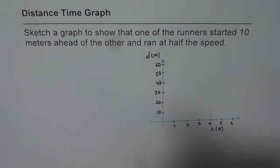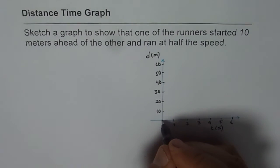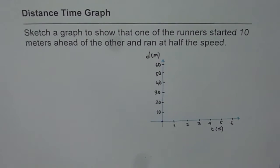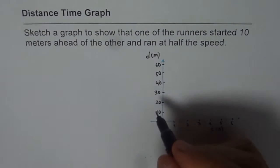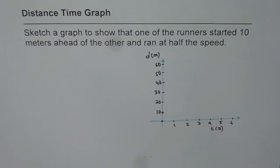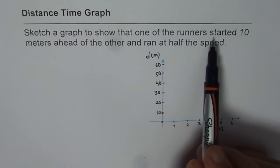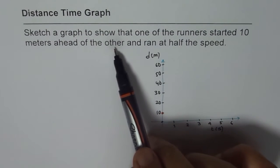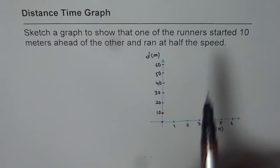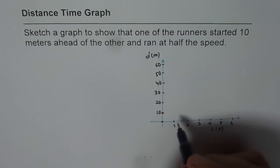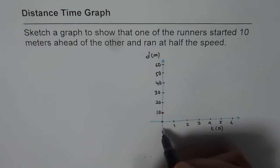That means one of the runners starts from this position; the other runner starts 10 meters ahead. That is 10 meters ahead, starting point is different. The second criteria says started 10 meters ahead of the other and ran at half the speed. So the speed of the first runner has to be twice the speed of the second runner.